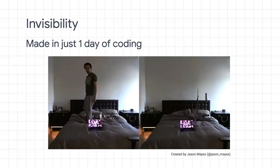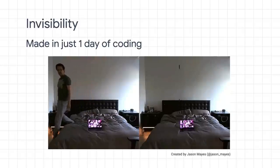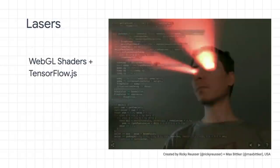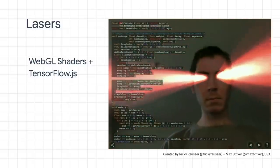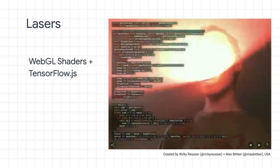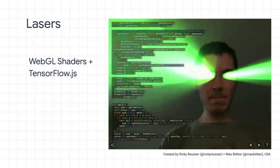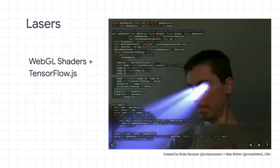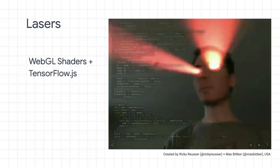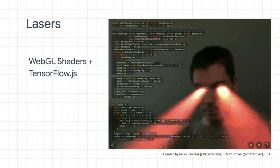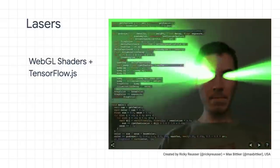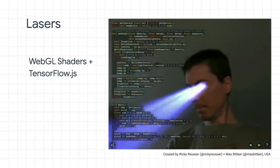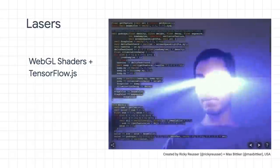No images are sent to the server for classification, leading to real-time results. Next, what about lasers? Another community member combined his love for WebGL shaders with TensorFlow.js to enable him to shoot lasers from his eyes and mouth, much like Iron Man in the movies. This uses the FaceMesh model to run in real-time in the browser without issue. And whilst it's a fun demo, you can imagine using this for a movie launch to amplify reach with creative experiences for fans and much more.